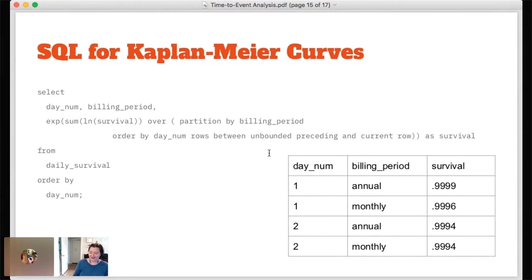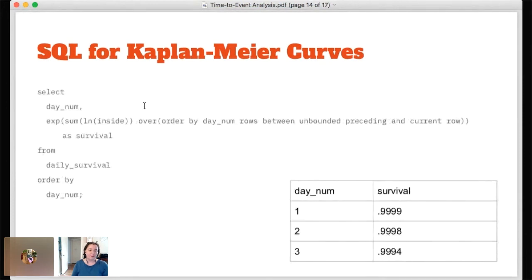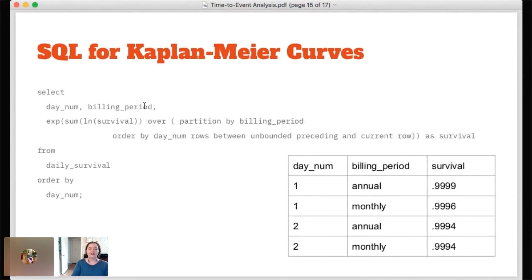But I told you you could have more than one curve and you could have them in your SQL without having to compute each of these separately. You just need some categorical variable and to include that in your original data set and then when you calculate the di over ni for each of the days you also group by your categorical variable. So I would have day_num comma billing_period here and I would group by day_num comma billing_period. And then when I get to the end I just tell it to partition by billing_period so that it calculates these separately for the two different billing periods or however many cases that you have and then you still have your unbounded preceding and current row to get your multiplication over all the past values of ti.